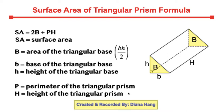Capital H is the height of the triangular prism, so this length right here, how tall the triangular prism is. Let's take a look at an example.